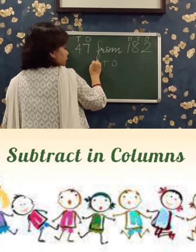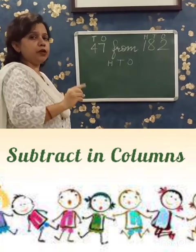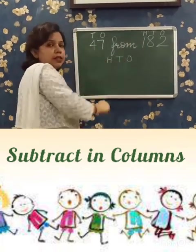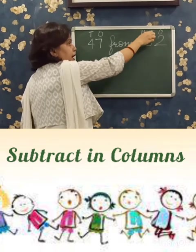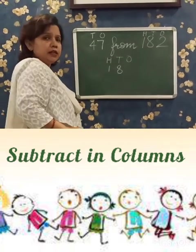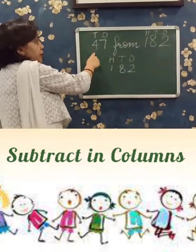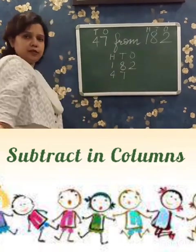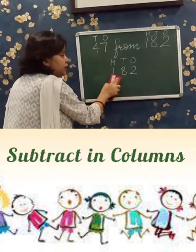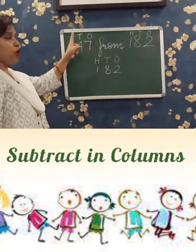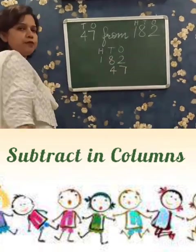Write O, T, H in the answer's place. In subtraction, always write the bigger number first. The bigger number is 182: 1 in the 100's place, 8 in the 10's place, 2 in the 1's place. Below that, 47: 4 is 4 tens so write 4 in the 10's place, 7 ones so write 7 in the 1's place.